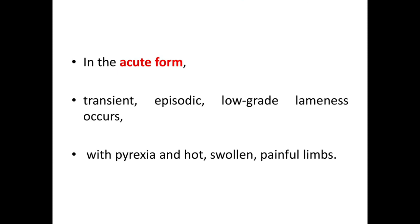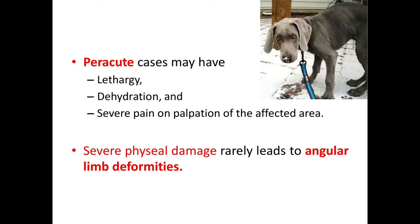The condition usually affects dogs two to eight months of age. There are different forms: in the acute form, there is transient episodic low-grade lameness with pyrexia and swollen, painful limbs.